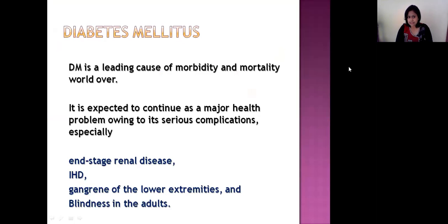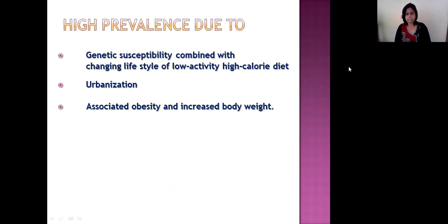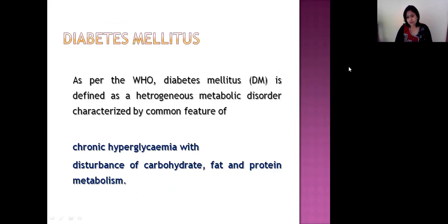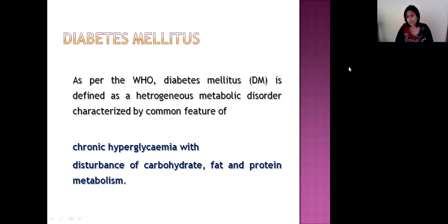Diabetes mellitus is a leading cause of morbidity and mortality all over the world. It is expected to continue as a major health problem owing to its serious complications like end-stage renal disease, IHD, gangrene of the lower extremities, and blindness in adults. As per the WHO, diabetes mellitus is defined as a heterogeneous metabolic disorder characterized by chronic hyperglycemia, in which carbohydrate, fat, and protein metabolism are disturbed.